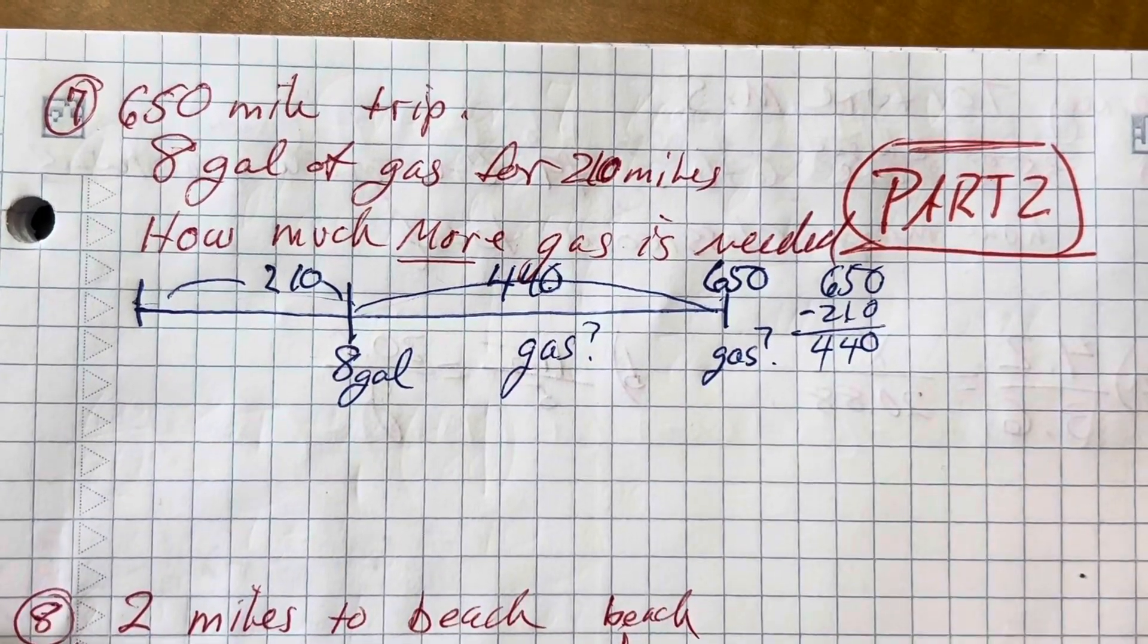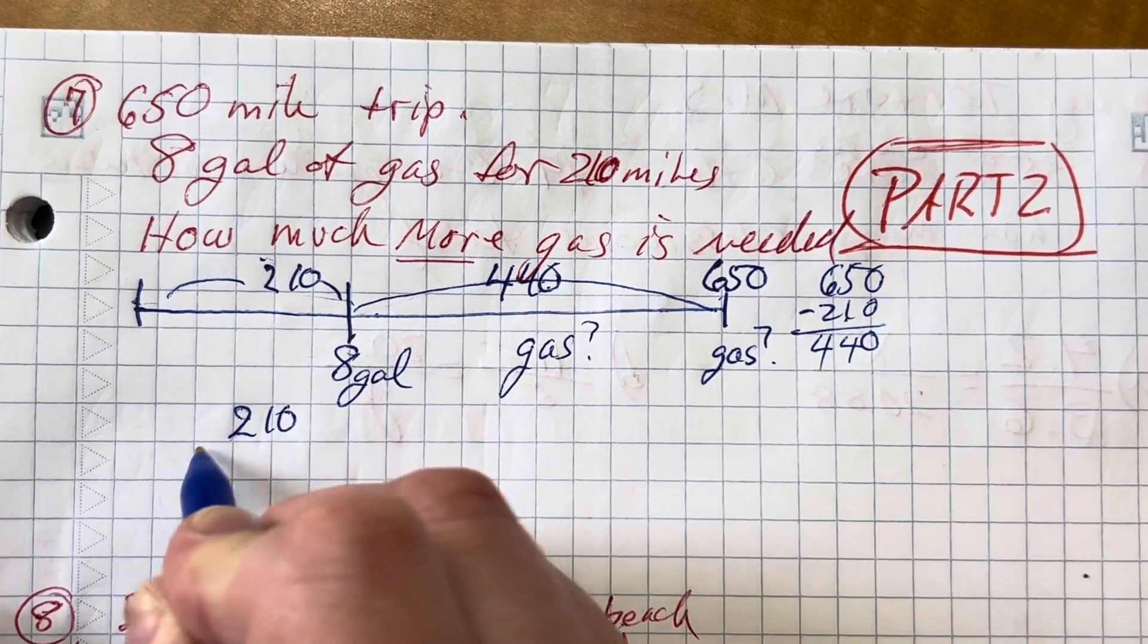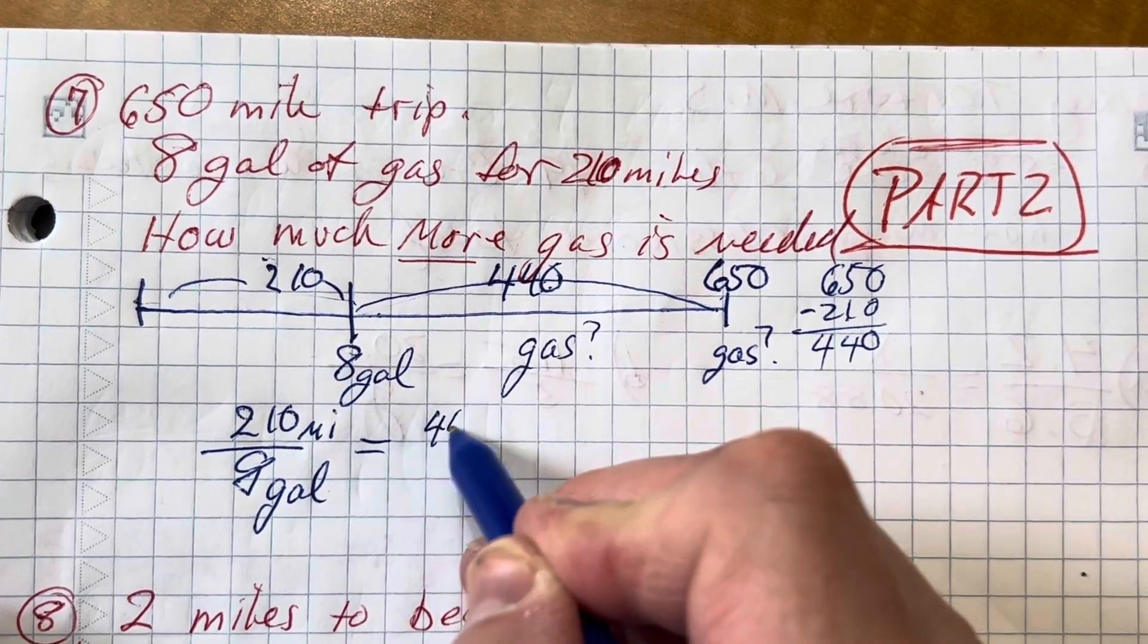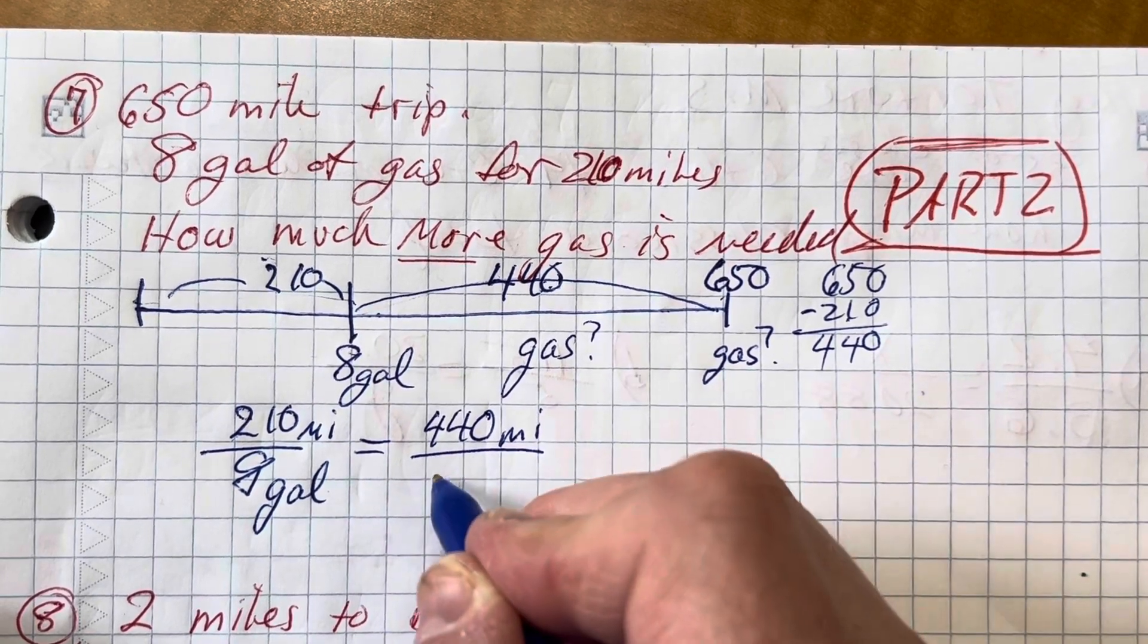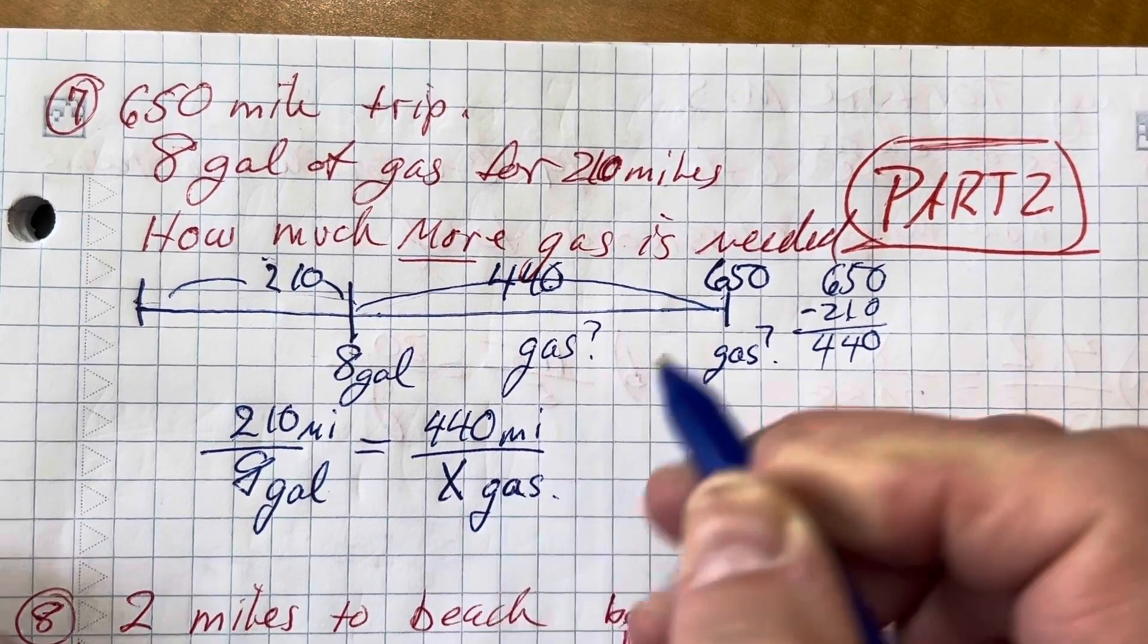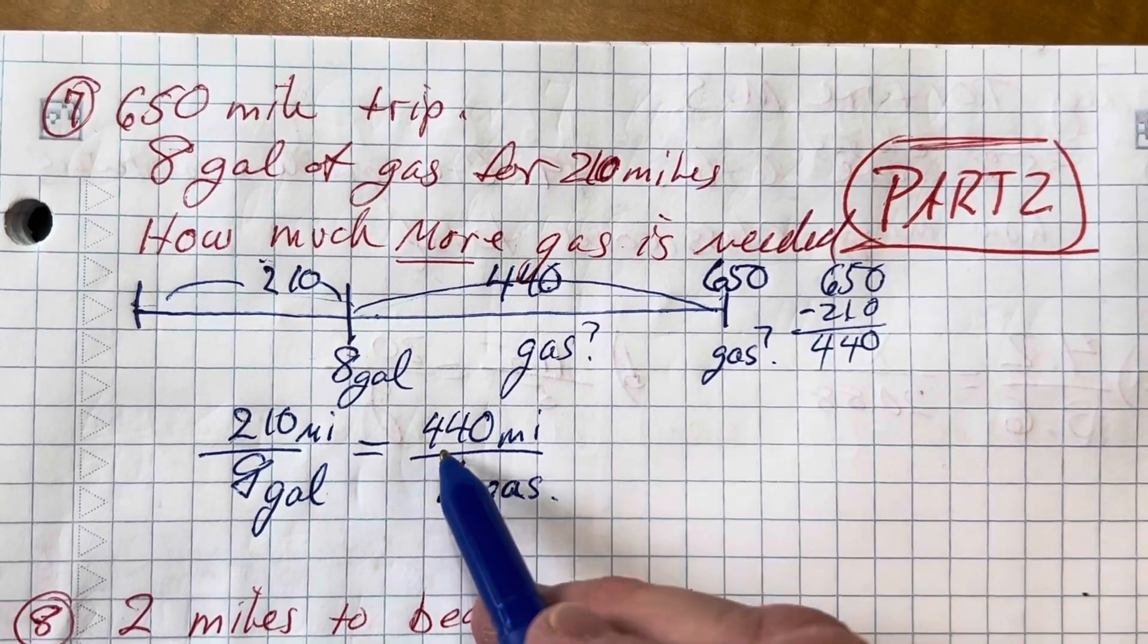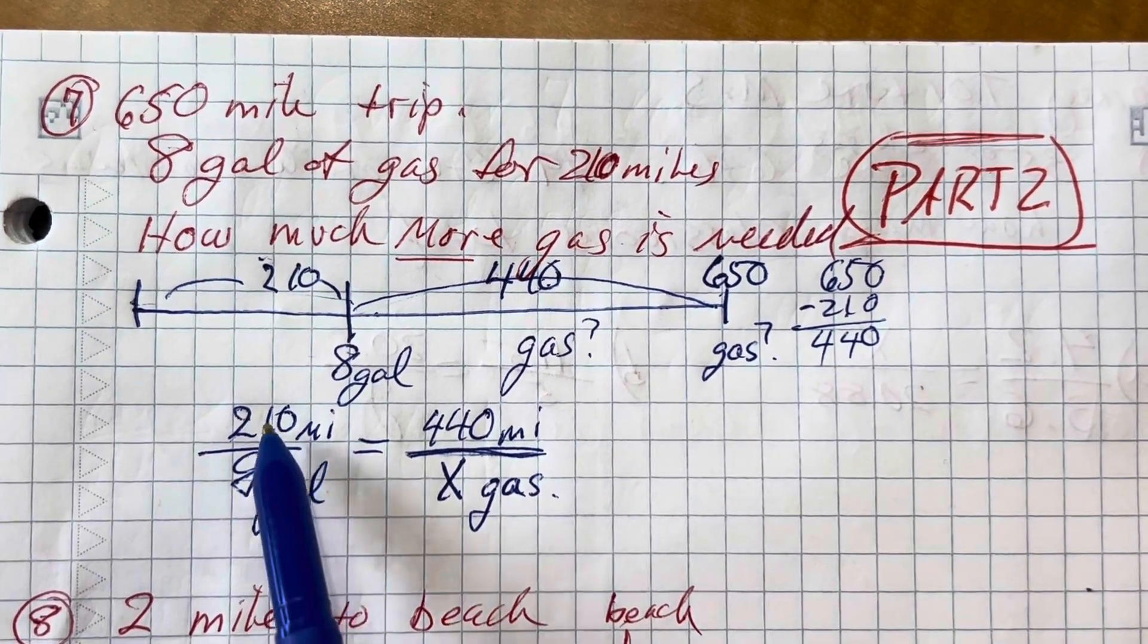All right, so this is really a proportional relationship. I can go 210 miles with eight gallons of gas and set that equal to 440 miles. We need how many gallons of gas? I'm going to call that x gas. Sounds like something you take so you don't have gas. Oh, it's called gas x, isn't it? All right, so how do I make this? What do I do?